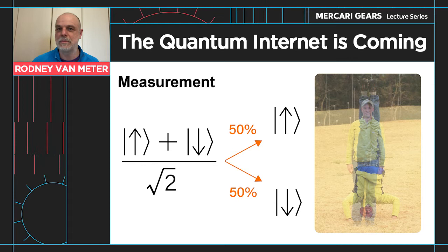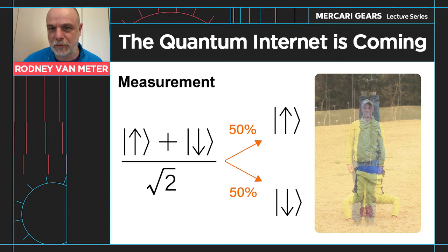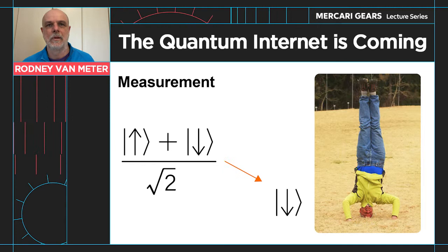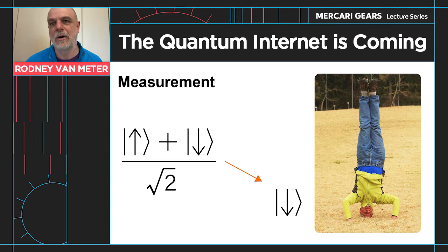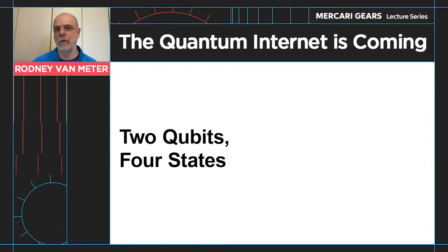The qubit will be in one or the other when you measure it — you won't see the superposition. What happens is, probabilistically, you'll get one of those possible outcomes. So say in this case, maybe just at random, we got the down state — probabilistically that happened. So this is one qubit.